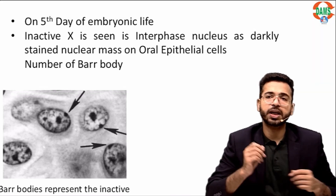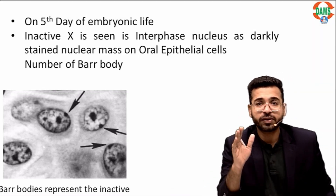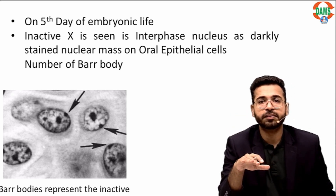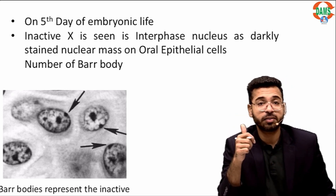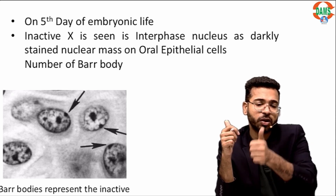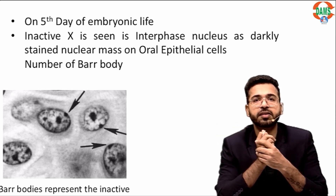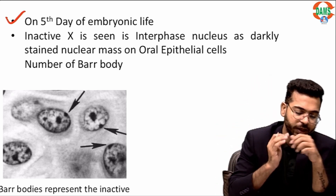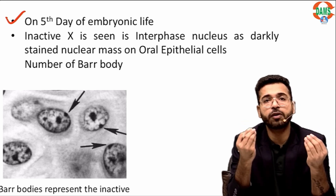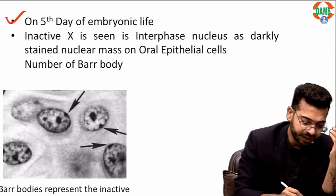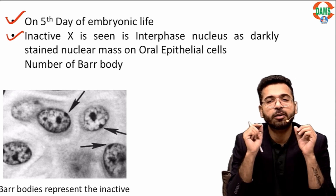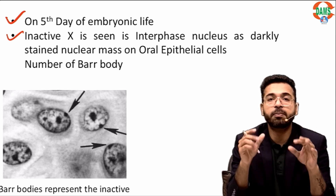On the fifth day of embryonic life, one of the X chromosomes gets genetically inactive because of XIST RNA. XIST RNA inhibits the X chromosome — this is responsible for the Lyon hypothesis, which occurs on the fifth day of embryonic life. This inactive X is seen in the interphase nucleus as Bar bodies.